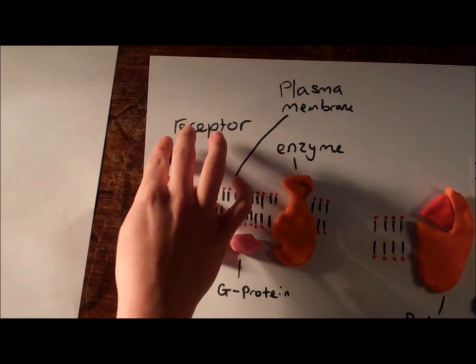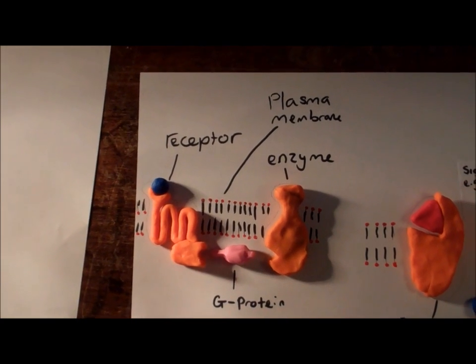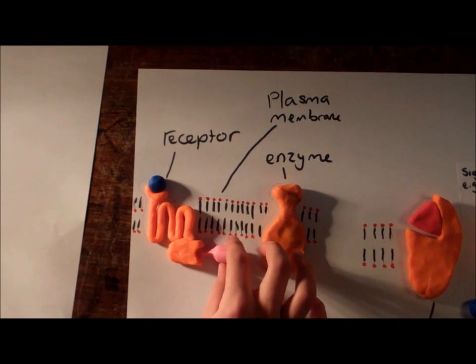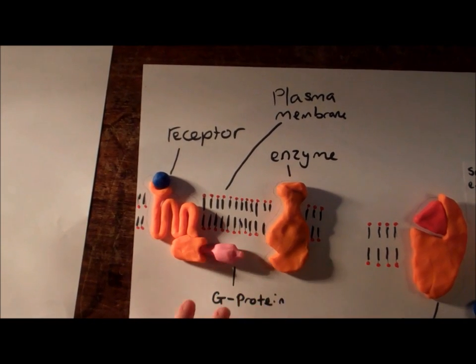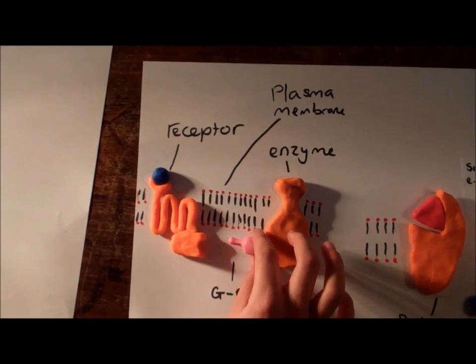A receptor in the plasma membrane interacts with another molecule, a G-protein, when the signal molecule attaches to the receptor. The G-protein is activated. The enzyme is then attached by the G-protein, which causes a reaction inside the cell.